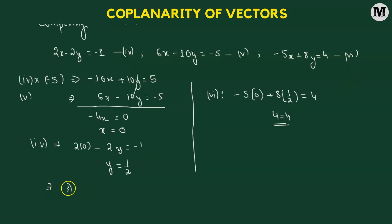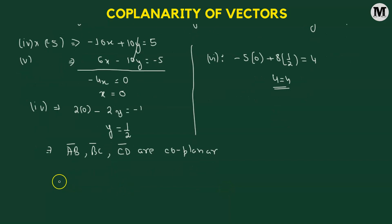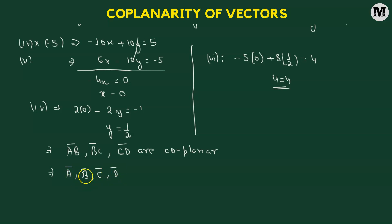This means that vectors AB, BC, and CD are coplanar. Since these vectors are coplanar, the points A, B, C, and D — whose position vectors are OA, OB, OC, and OD — are coplanar points that lie on the same plane. Hence proved.